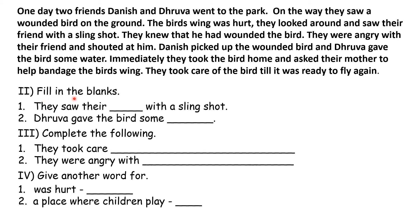We will do fill in the blanks. You have to find the answer from the passage. Fill in the blanks: they saw their dash with a slingshot. A slingshot in Hindi is called catty — it has a little rubber, a twig, and a rubber shot. So they saw their friend with a slingshot. Your answer here is friend.